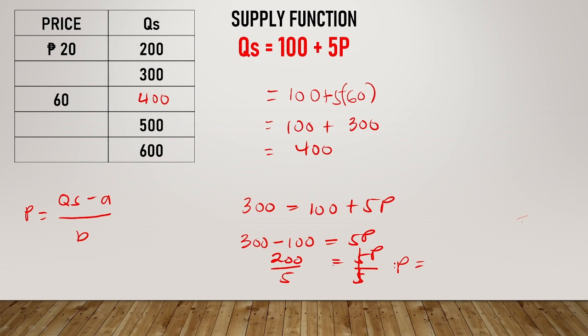Let's check using our formula. So quantity supplied is 300 minus a which is 100, over b, the interval which is 5. 200 divided by 5 equals 40.